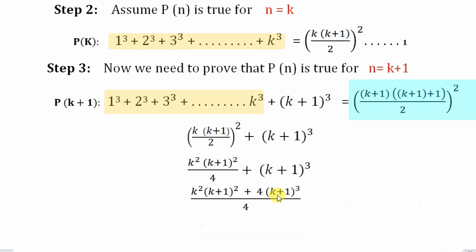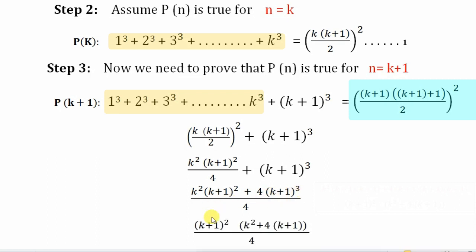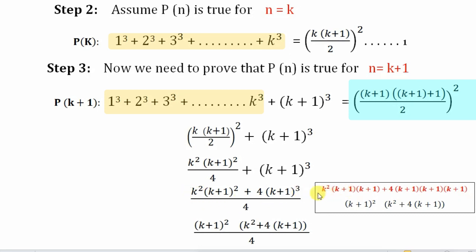Instead of directly simplifying, take out the common terms — it will be much easier. What is common between k²(k+1)²/4 and (k+1)³? We can take (k+1)² as a common factor. What remains inside is k²/4 plus (k+1), which after multiplying through gives k² + 4(k+1), that is k² + 4k + 4.